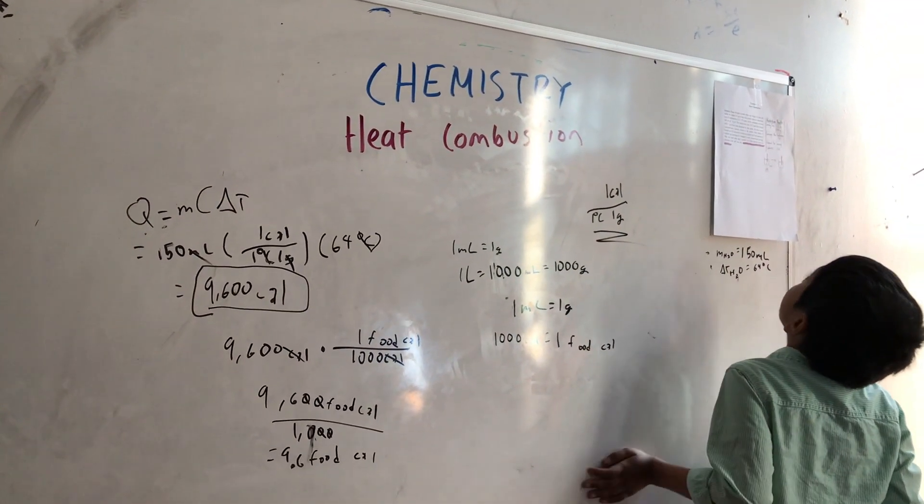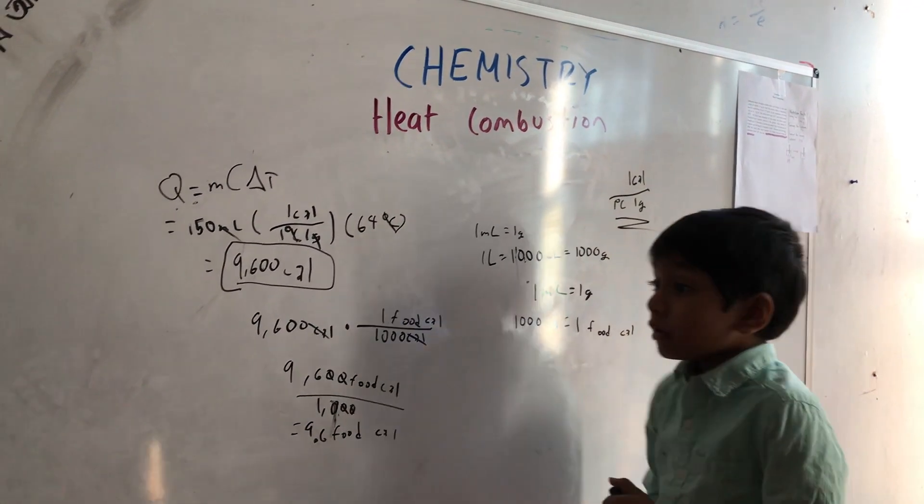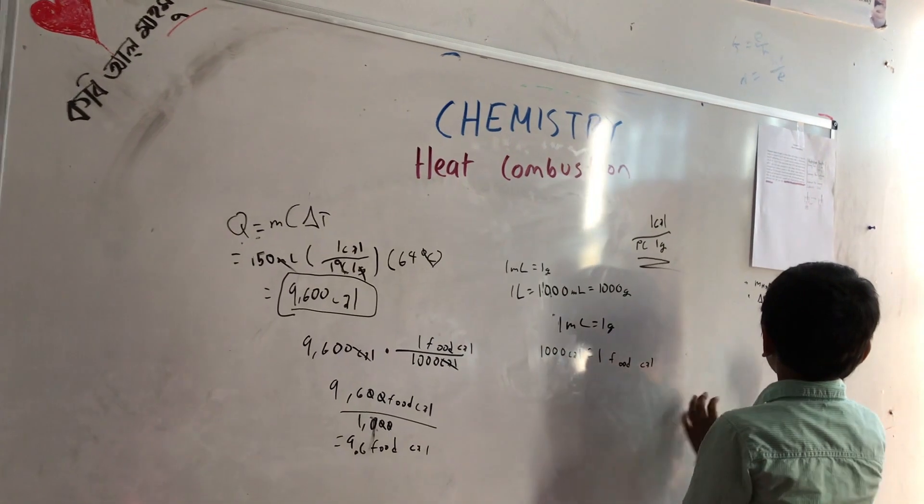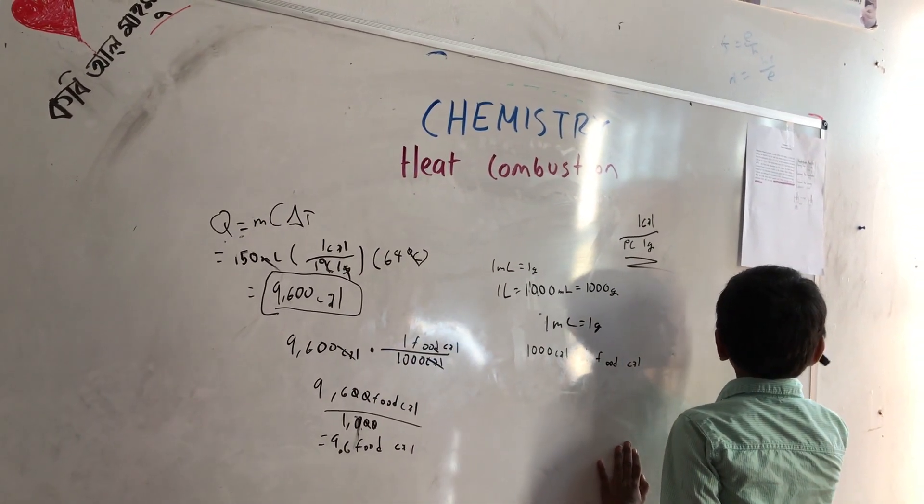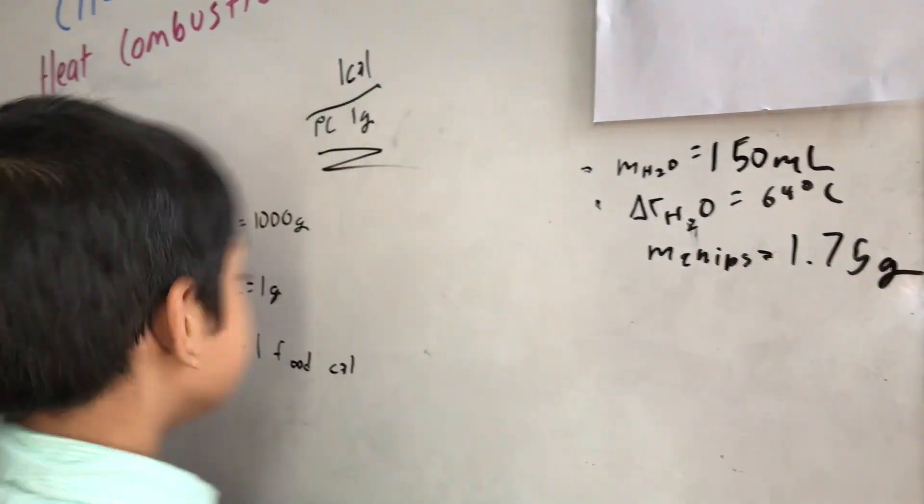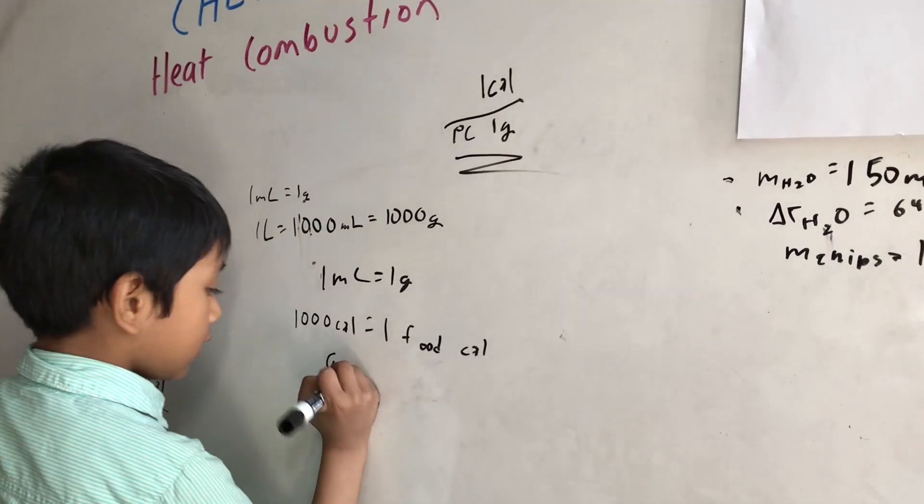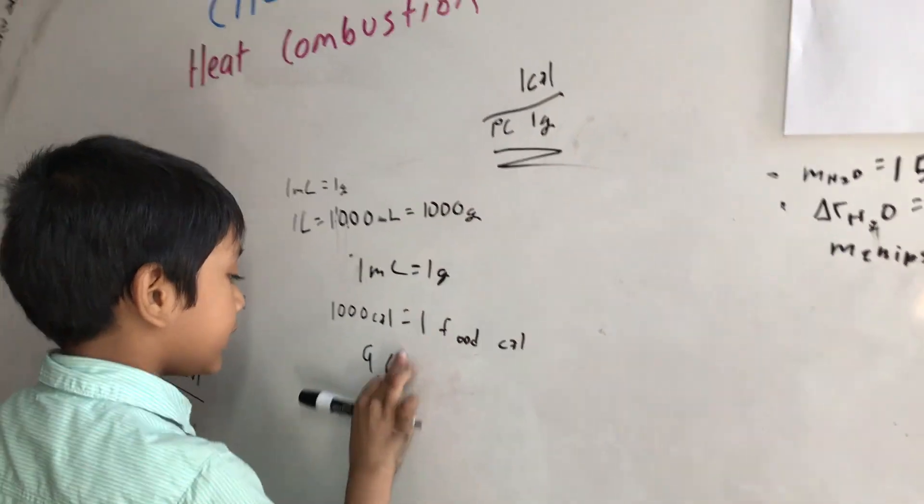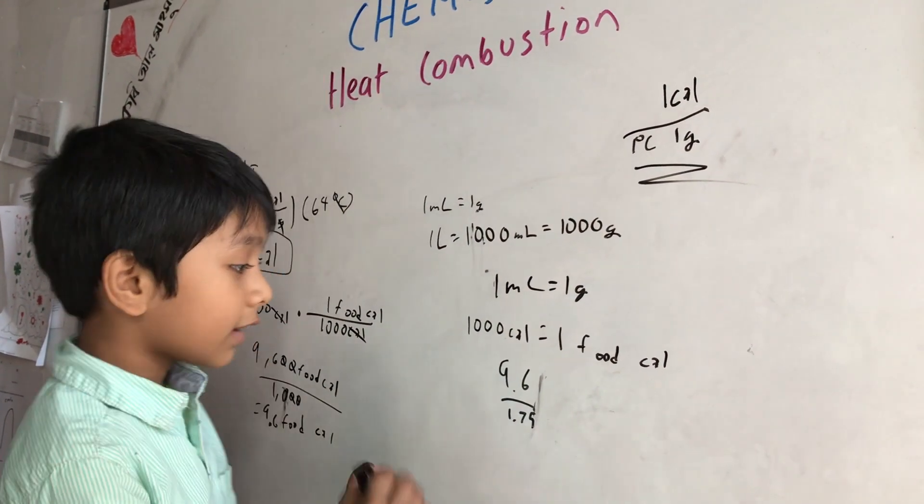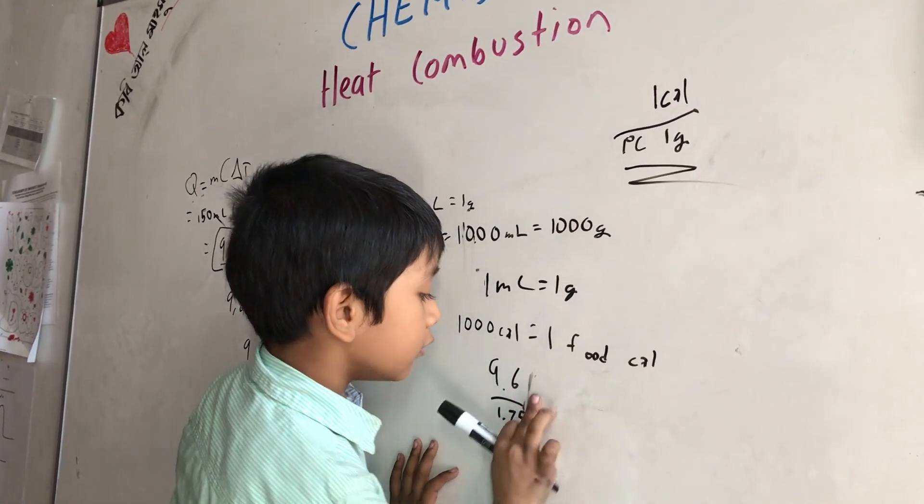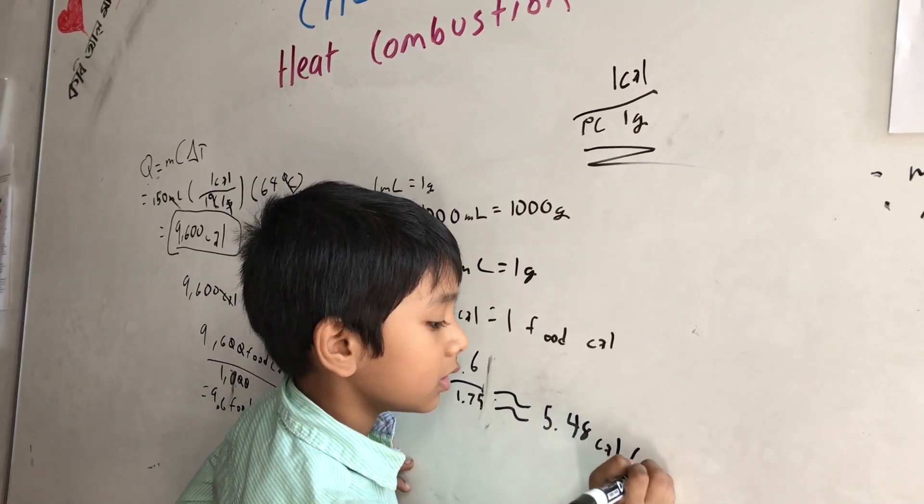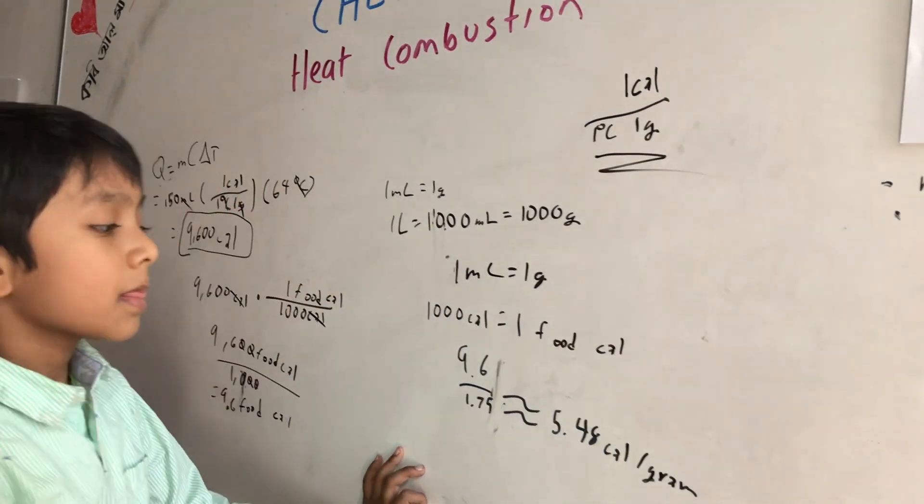Can you calculate calories per gram? Okay. Now we just divide the food calories by how many grams of the mass of the chips. So 1.75 grams. So 9.6 divided by 1.75, I'll give you some time to look in the calculator. Okay. Now if you type the numbers, you will get an estimation of about 5.48 calories per gram.